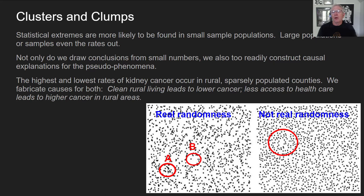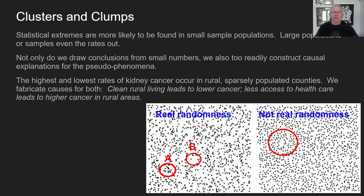Kahneman gives the example: the highest and lowest rates of kidney cancer occur in rural, sparsely populated counties. When people are shown those two results separately, they fabricate causal stories for both. For low cancer: 'It must be the clean rural living.' For high cancer: 'Less access to healthcare.' But if you're in a local cluster that looks busy or empty, you're building a causal story about what is actually random variation. If you zoom out, there's nothing there to explain, because larger sampling evens things out.